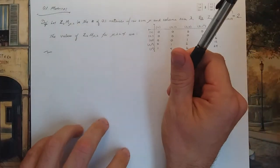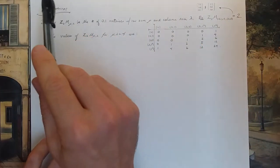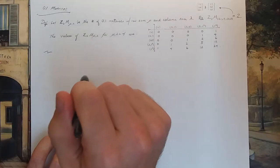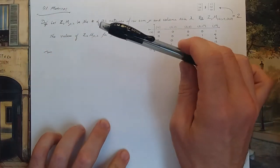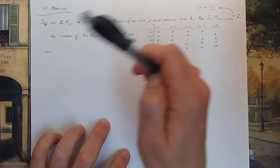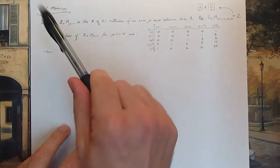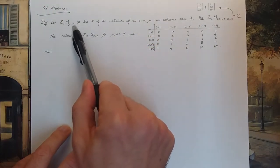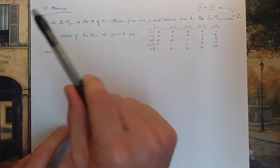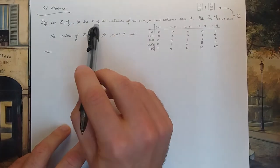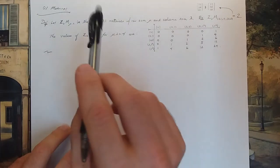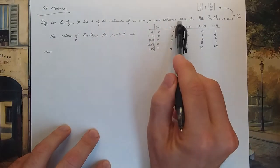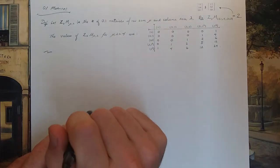This video introduces the combinatorics of 0,1 matrices with specified row and column sums and its relationship to symmetric polynomials. We let Z2M(μ,λ), where μ and λ are integer partitions of n, be the number of 0,1 matrices — matrices with entries either 0 or 1 — that have row sum μ and column sum λ.